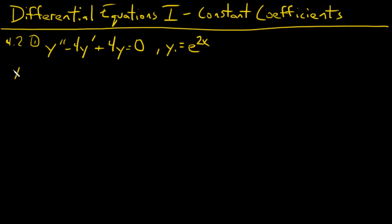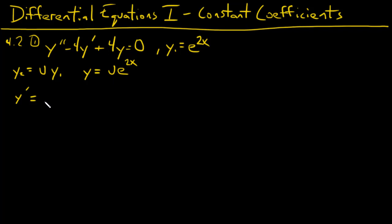We're going to say y2 is equal to some function u times y sub 1. In this case our y sub 1 is e to the 2x, so y2 — which I'll call y for now — is equal to u times e to the 2x. So y prime is going to equal first times derivative of the second: 2u e to the 2x, plus the second times derivative of the first: u prime times e to the 2x.